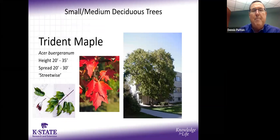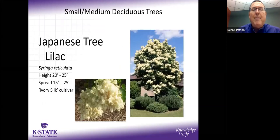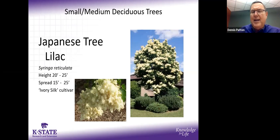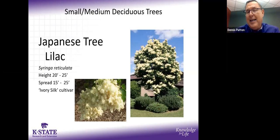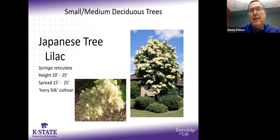Japanese tree lilac is in the lilac family — it doesn't have the wonderful scent of spring purple lilacs, but it's a nice rounded upright tree in the 20 to 25-foot range. 'Ivory Silk' tends to be the best cultivar. It blooms about a month later, in May, so you get color past the early spring rush, along with a golden yellow fall color.